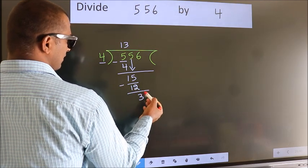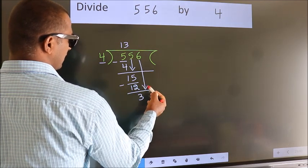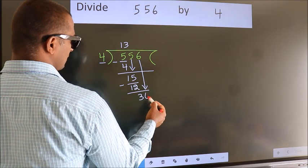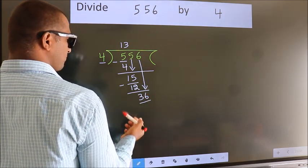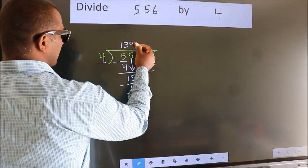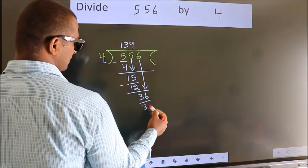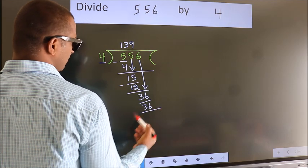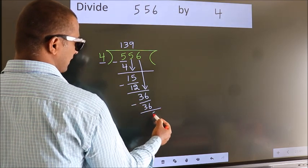After this bring down the beside number. So 6 down. So 36. When do we get 36? In 4 table. 4 9s 36. Now we subtract. We get 0.